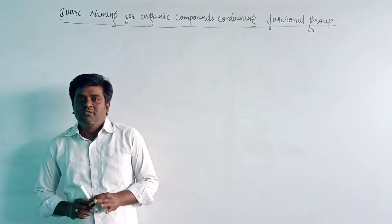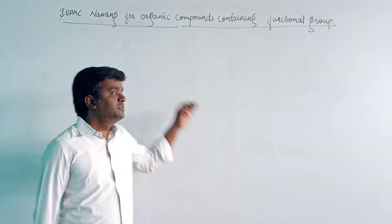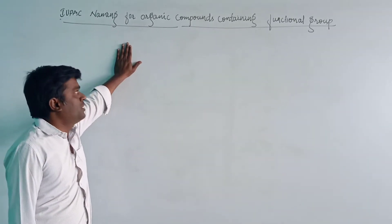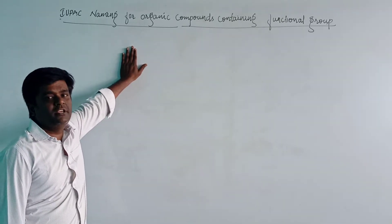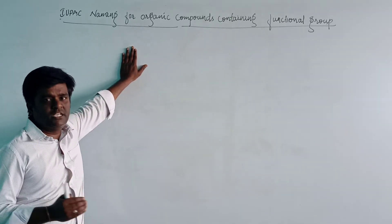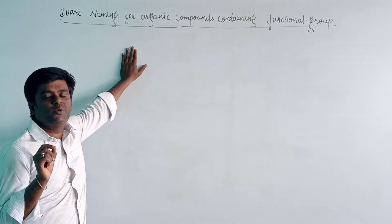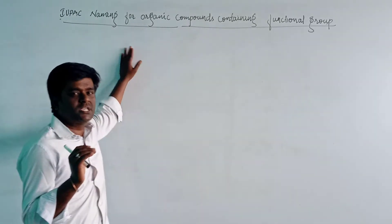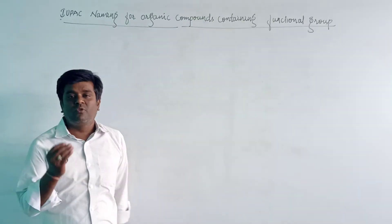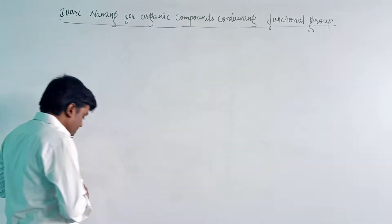Good morning students. In today's class, we are discussing IUPAC nomenclature for organic compounds containing functional groups. In the last class, we have seen if one functional group is present, then how we will start the numbering and how we will name an organic compound. So let us see once again.